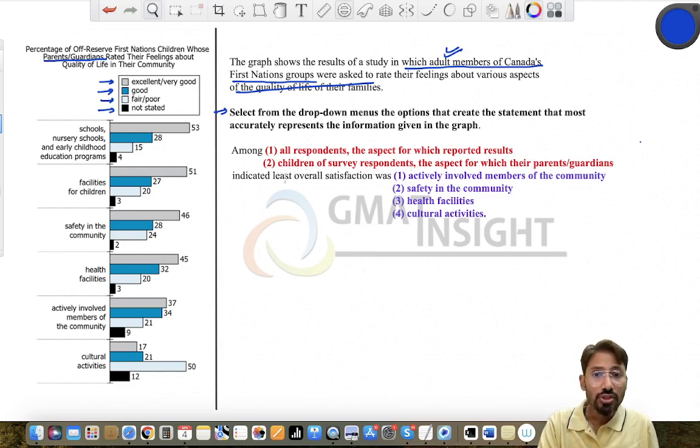Among children of survey respondents, the aspect for which their parents or guardians indicated least overall satisfaction. Now if you look at these two choices here only, you can just be very sure that choice two has to be the correct choice, because the question clearly stated that this is the percentage of off-reserve First Nations children whose parents or guardians rated the feeling about the quality of life.